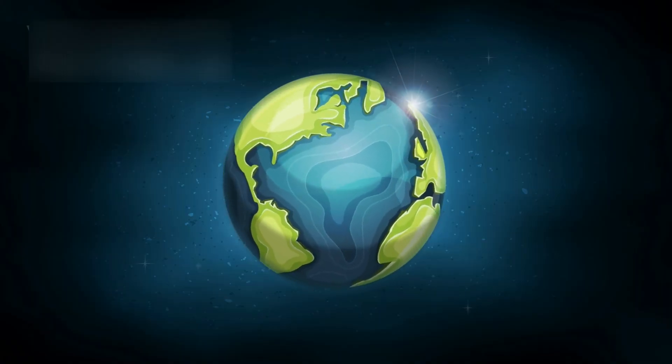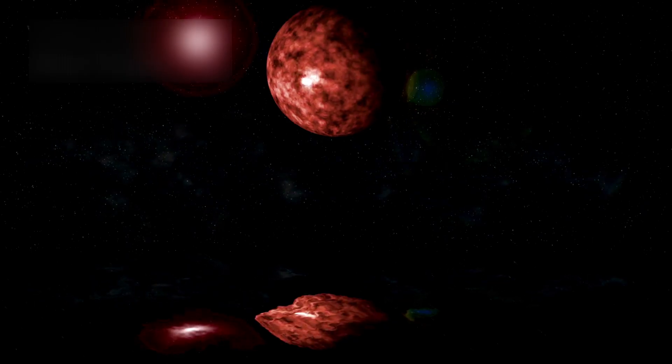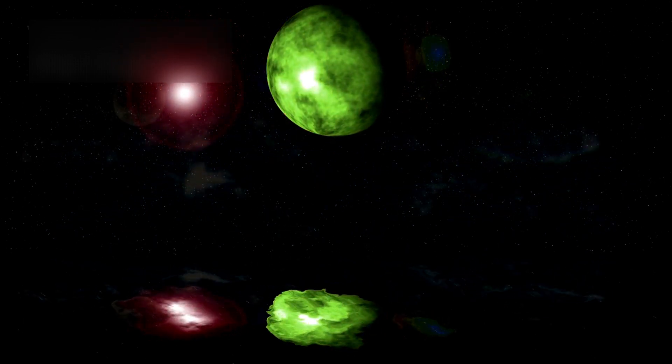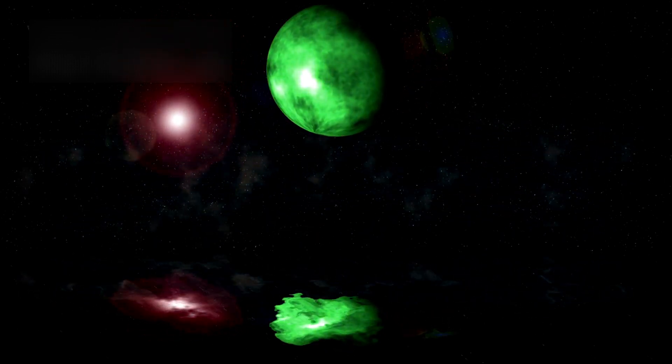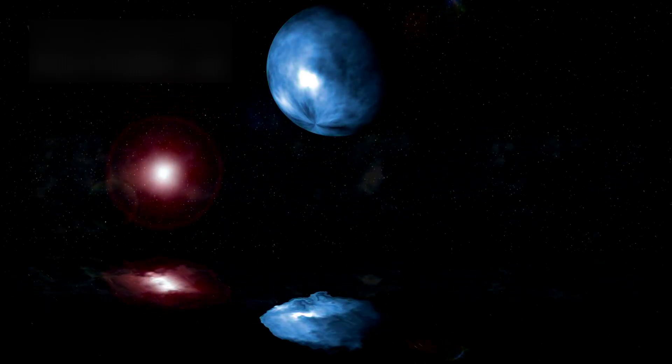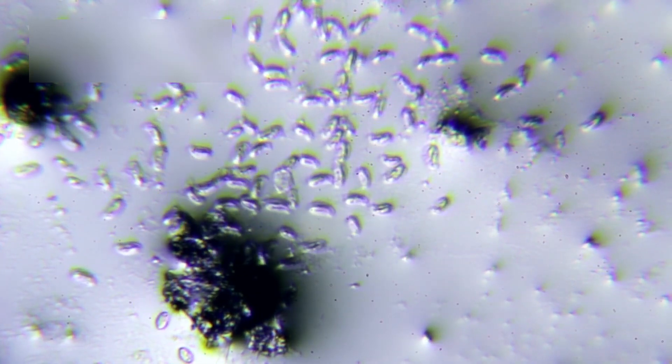Hycean Worlds can be up to 10 times the mass of Earth and twice its radius. Unlike gas giants like Jupiter, they are oceanic planets under a hydrogen blanket, allowing liquid water to persist even at distances where Earth-like planets would freeze. In some cases, these oceans could account for up to 90% of the planet's mass. Such environments may support life, even under extreme conditions, similar to Earth's extremophiles that thrive in hydrothermal vents or acidic lakes.